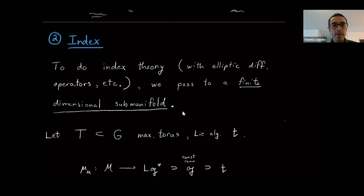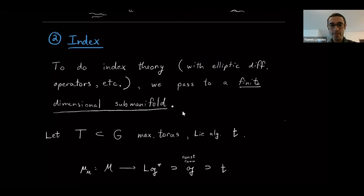The next thing I'm going to talk about is what I'm going to mean by index. Telemann and Woodward have some algebro-geometric method of defining an index, and I have a different approach. It would be nice if we had some elliptic operator on this infinite dimensional space and could take its index paired with these K-theory classes — but that seems exceedingly difficult and very technical to do. So what we'll be doing instead is passing to a finite dimensional submanifold of the Hamiltonian loop group space and doing index theory on that finite dimensional submanifold.